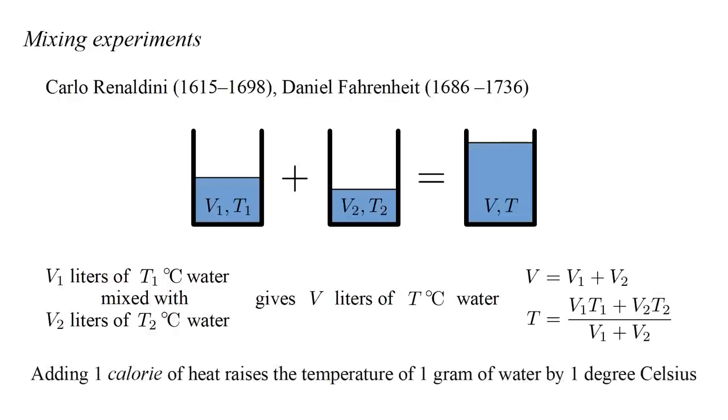Regardless of the ultimate nature of heat, it seemed clear that in this process, the hot water cooled by giving up some heat, and the cold water warmed by absorbing that heat. The amount of heat transferred was precisely that needed to bring the two volumes to the same temperature. This leads us to define the calorie as that amount of heat which raises the temperature of one gram of water by one degree Celsius.